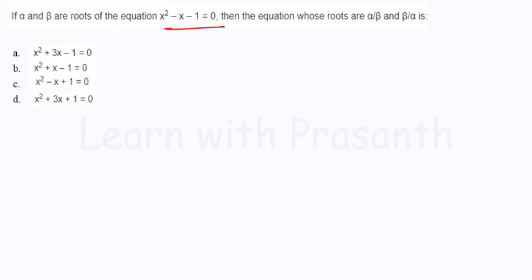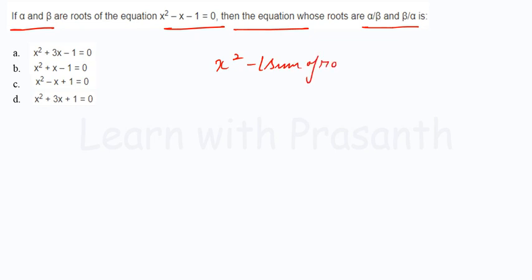If alpha and beta are the roots of the equation x² minus x minus 1 equal to 0, then find the equation whose roots are alpha by beta and beta by alpha. In this type of question, we are given the roots alpha and beta, and we need to find the new equation with roots alpha/beta and beta/alpha. We use the formula x² minus (sum of roots)x plus (product of roots) equal to 0.